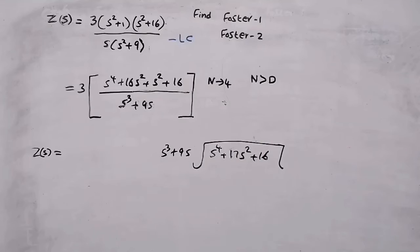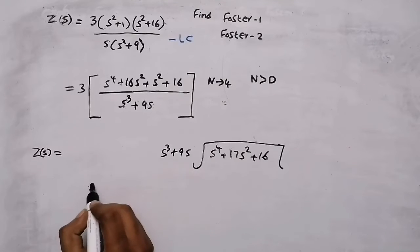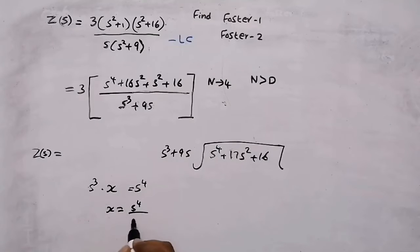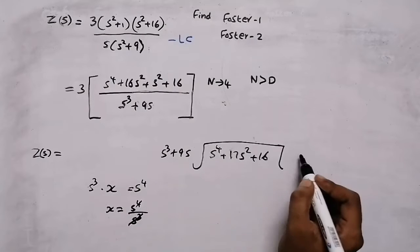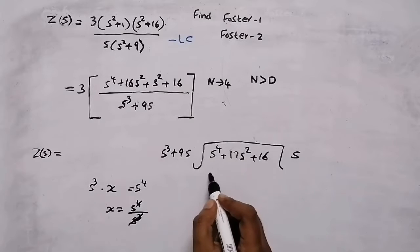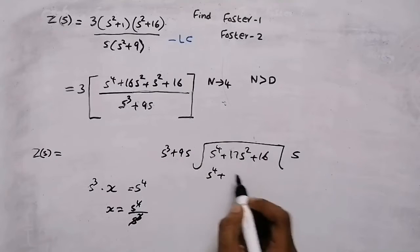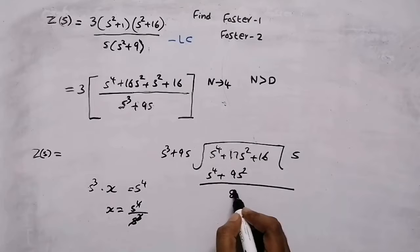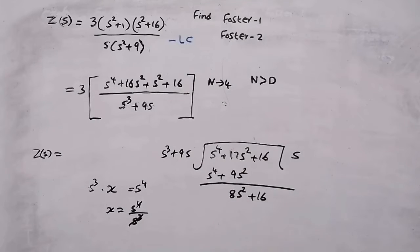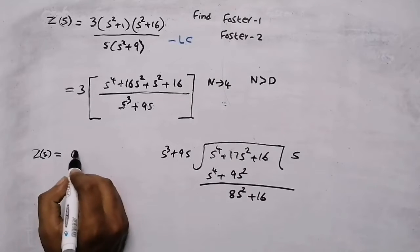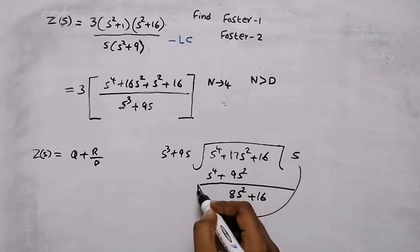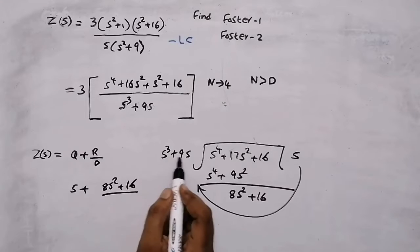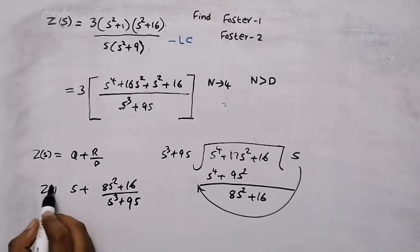To do long division: the first term is s cubed and the numerator starts with s raised to 4, so s cubed multiplied by s gives s raised to 4, so x equals s. Multiply: s cubed times s gives s raised to 4 plus 9s squared. Subtracting, s raised to 4 cancels and we get 8s squared plus 16 as the remainder. The new impedance function is the quotient plus remainder over divisor: s plus (8s squared plus 16) divided by (s cubed plus 9s).